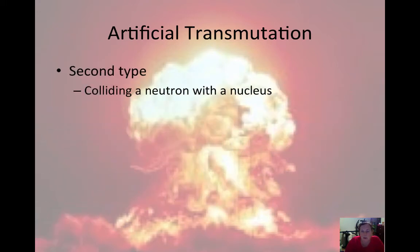The second type of artificial transmutation is when you use a neutron to collide into the nucleus. And this is what a nuclear reactor uses.